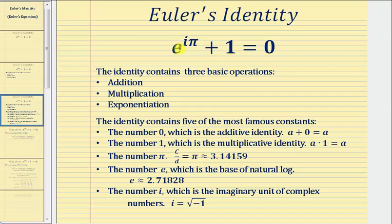The equation also contains E, which is the base of natural log. E is an irrational constant, just like pi, except E is approximately 2.71828.